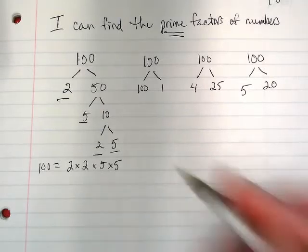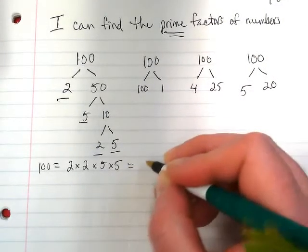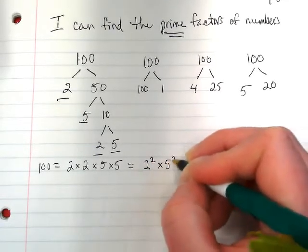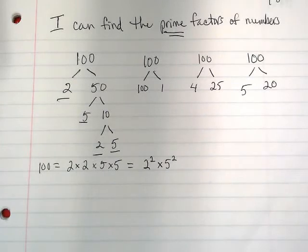And at the end we're going to be saying that one hundred equals two times two times five times five. And there is a shortcut way to write that. Which is two squared times five squared. Sound familiar from Friday's work?